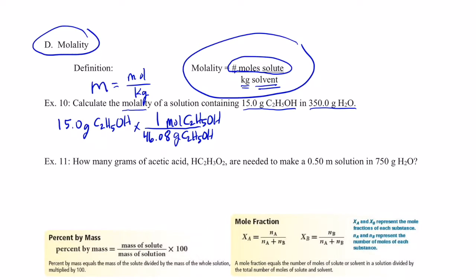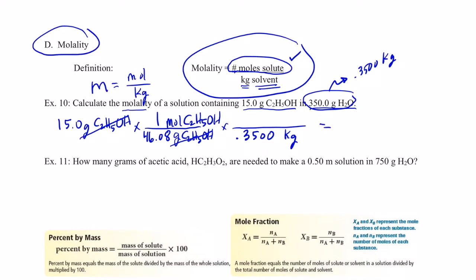Adding those together gives 46.08 grams per mole. Grams of solute ethanol are now canceled and I'm in moles of solute — exactly what I want in the numerator. Now I just divide by kilograms of my solvent. 350 grams of water equals 0.3500 kilograms. So 15.0 divided by 46.08, divided by 0.3500, gives us 0.930 molal — three significant figures.